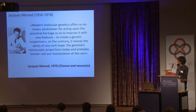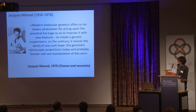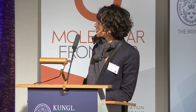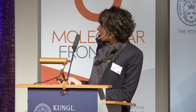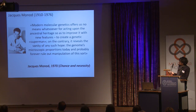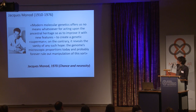This shows that 40 to 50 years later, you can take interesting breakthroughs highlighted in the past and still dig into details of topics which may not sound fashionable, but you can still find very interesting points. Although Jacques Monod was very visionary, in 1970 he wrote in his book 'Chance and Necessity': 'Modern molecular genetics offers us no means for acting upon the ancestral heritage to create a genetic superman — the genome's macroscopic proportions today and probably forever ruled out manipulation of this sort.' Unfortunately he died at a relatively early age, and I'm sure he would be very glad to hear about CRISPR-Cas9.